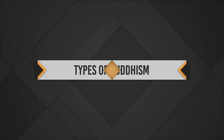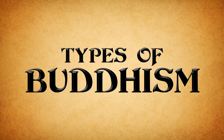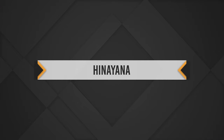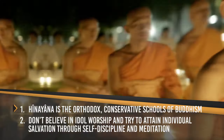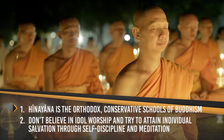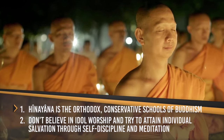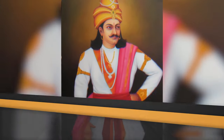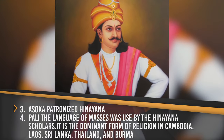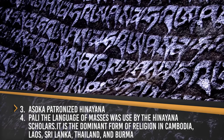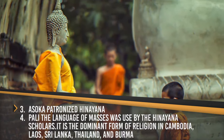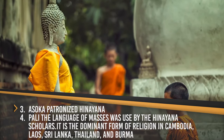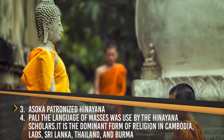Types of Buddhism: 1. Hinayana — Hinayana is the orthodox conservative school of Buddhism. They do not believe in idol worship and try to attain individual salvation through self-discipline and meditation. Ashoka patronized Hinayana. Pali is the language used by Hinayana scholars. It is the dominant form of religion in Cambodia, Laos, Sri Lanka, Thailand and Burma.